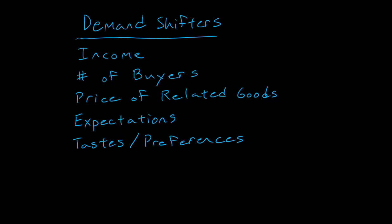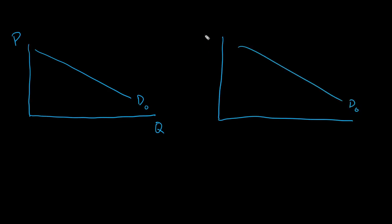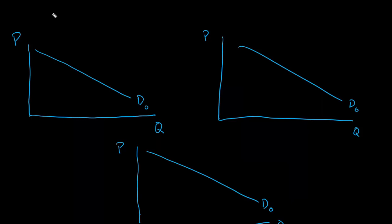Before we start looking at these individually, we're going to talk a little bit about what changing demand looks like. We mentioned this in the last video but I want to clearly put it out there. I'm going to draw out a couple of demand curves, always labeling my axes with price and quantity, as well as labeling the curve. We'll look at an increase, a decrease, and a change in quantity demanded.